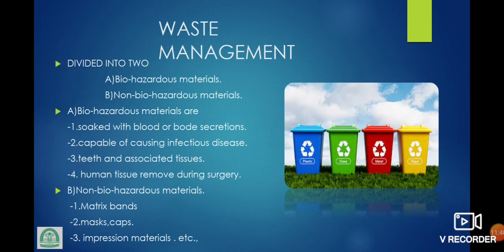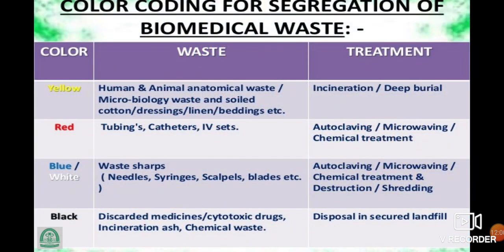Waste management is divided into biohazardous materials and non-biohazardous materials. Biohazardous materials are soaked with blood or blood secretions, capable of causing infectious disease — teeth and associated tissues, human tissues removed during surgery. Non-biohazardous materials: matrix band, mask, cap, impression material, etc. Color coding for segregation of biomedical waste — four colors: yellow, red, blue or white, black. Yellow: human or animal anatomical waste, microbiological waste, soiled cotton dressing, linen, bedding — incineration or deep burial. Red: tubing, catheter, IV sets — autoclaving, microwaving, or chemical treatment. Blue or white: waste sharps like needles, syringes, scalpels, blades — autoclaving, microwaving, chemical treatment and shredding. Black: discarded medicines and cytotoxic drugs — incineration or chemical treatment, disposed in secured landfill.